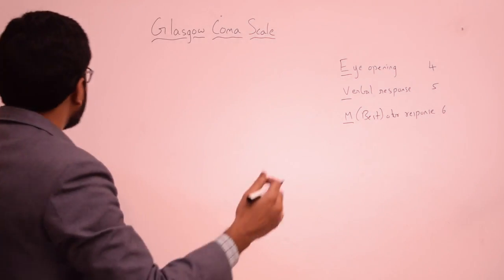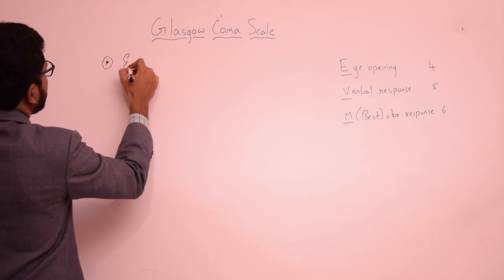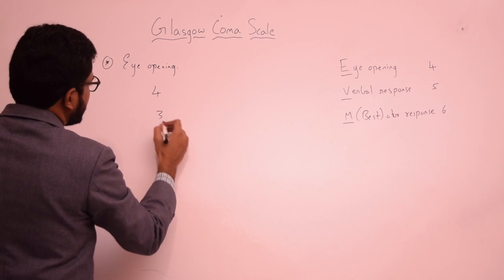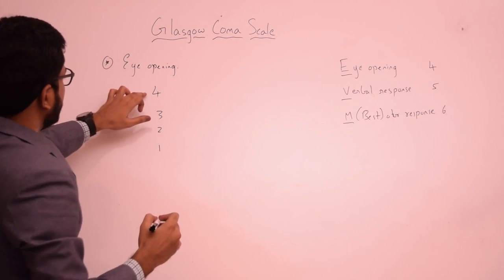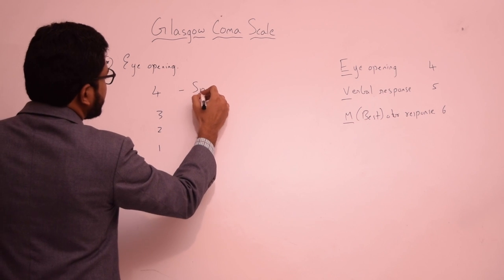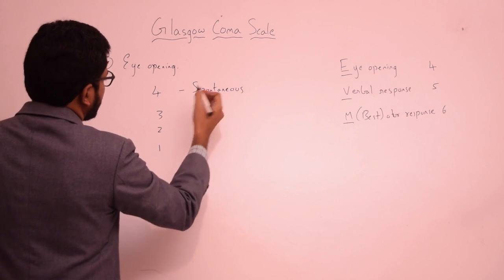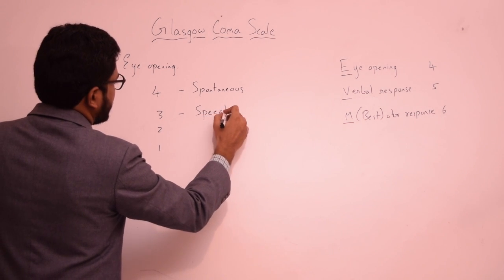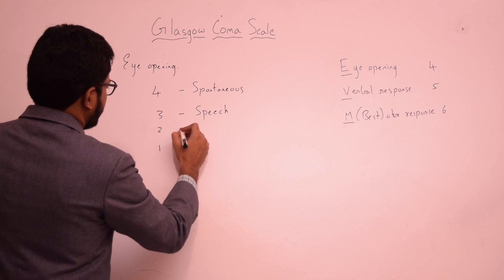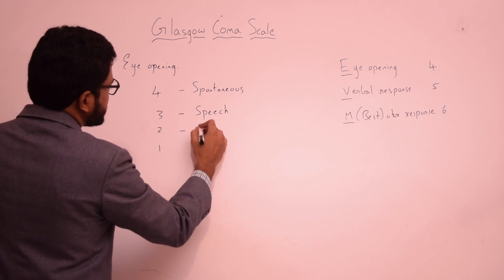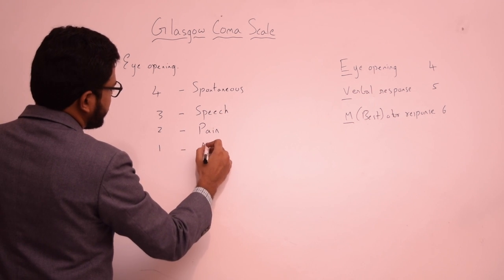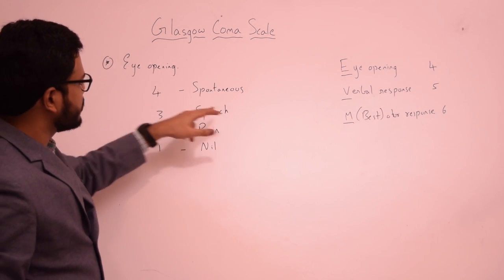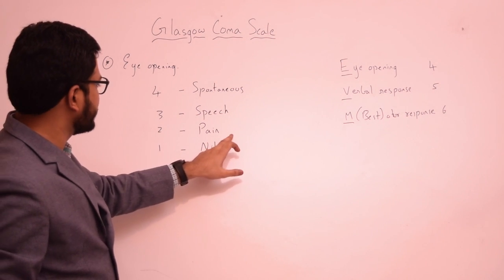Starting with eye opening: the maximum score is four and the minimum in any component is one. A score of four is given when eye opening is spontaneous. A score of three is given when eye opening is in response to speech. A score of two is given when there is eye opening in response to pain, and a score of one is given when there is no response.